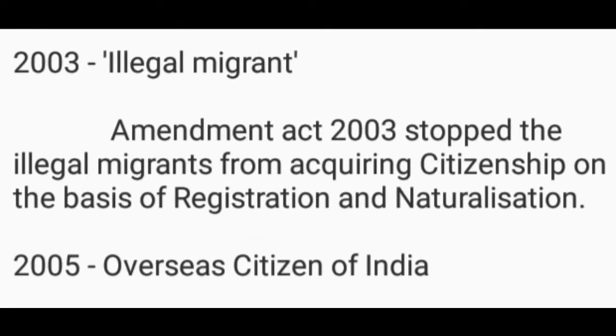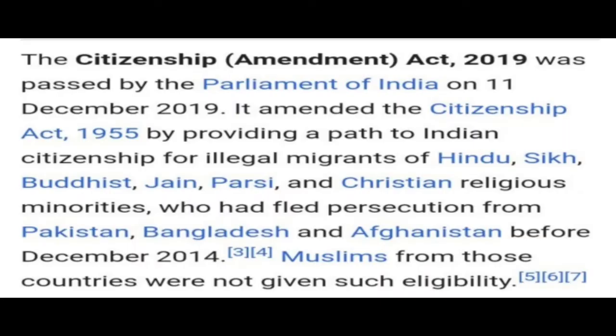The Citizenship Amendment Act 2003 deals with illegal migrants, stopping them from acquiring citizenship on the basis of registration and naturalization. The Citizenship Amendment Act 2005 deals with overseas citizens of India. The Citizenship Amendment Act 2019 was passed by the Parliament of India on 11th December 2019. It amended the Citizenship Act 1955 by providing a path to Indian citizenship for illegal migrants of Hindu, Sikh, Buddhist, Jain, Parsi and Christian religious minorities who had fled persecution from Pakistan, Bangladesh and Afghanistan before December 2014. Muslims from those countries were not given such eligibility.